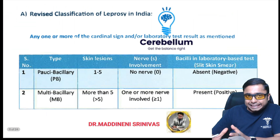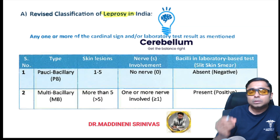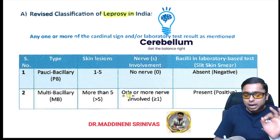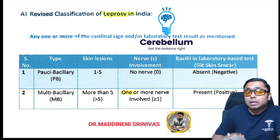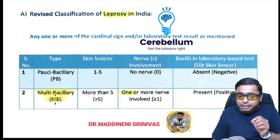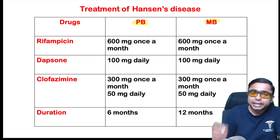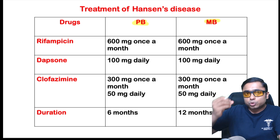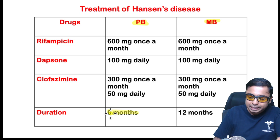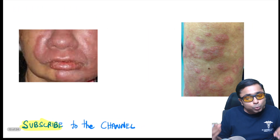Next is the classification of leprosy. The WHO classification is followed: even one nerve involvement categorizes a patient as multibacillary. Treatment uses the same three medications — rifampicin, dapsone, and clofazamine — in the same dosages, but for different durations: paucibacillary is six months and multibacillary is 12 months.